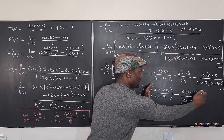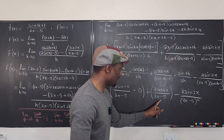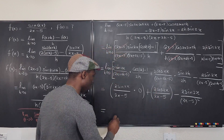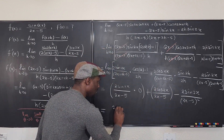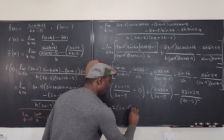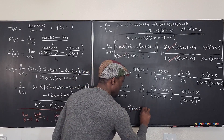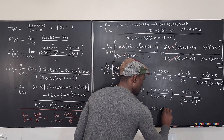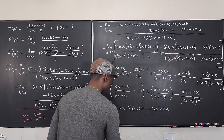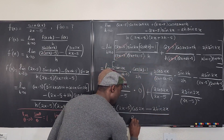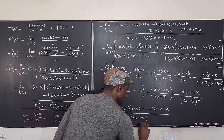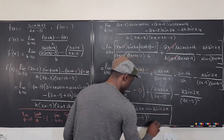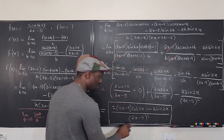The first term is already 0, so we just need these last two parts. Multiplying top and bottom by 2x minus 5 to combine them, our final answer is 2 times 2x minus 5 times cosine 2x minus 2 sine 2x, all divided by 2x minus 5 squared. And this is the derivative of f from first principles.